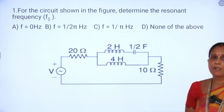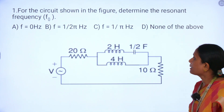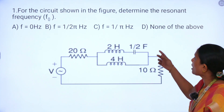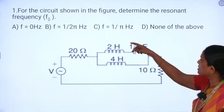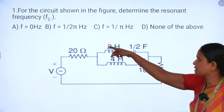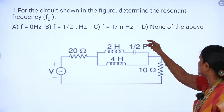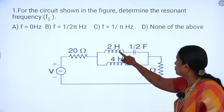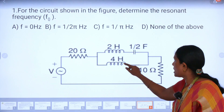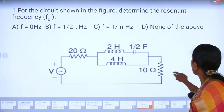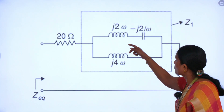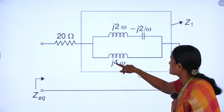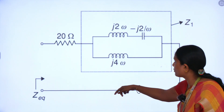Now I am going to solve problems in series resonant circuits. First problem — taken from the GATE question paper. For the circuit shown in the figure, we have to determine the resonant frequency. The options are: f = 0, 1/(2π), 1/π, and none of the above. The circuit consists of two series parameters and one parallel combination. I am re-expressing the circuit in terms of j: inductive reactance, capacitive reactance, and another inductive reactance.